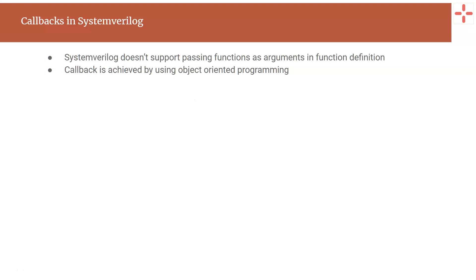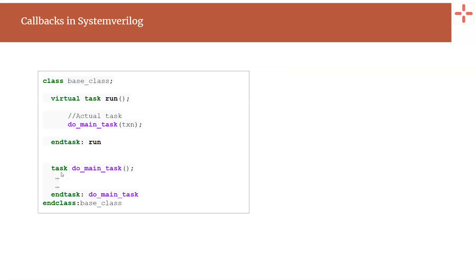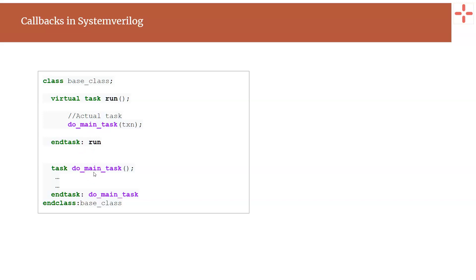You will now see how to write callbacks in SystemVerilog in a generalized way, and finally a simulation example where callbacks are used. Assume you have a class named base class with a member task called run, where you perform actual functionalities like driving something into the DUT or monitoring something from the DUT. Instead of using a single task, we will move all the functional part of the run task into another task called domain task, and call that task from the run task.